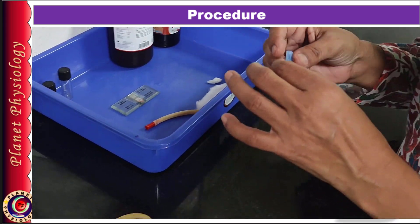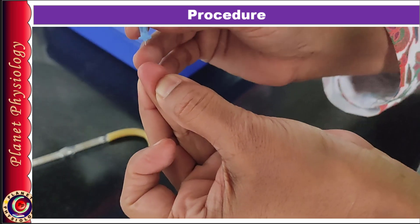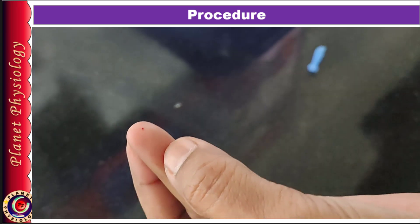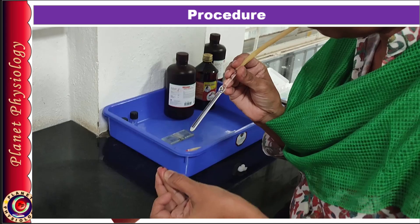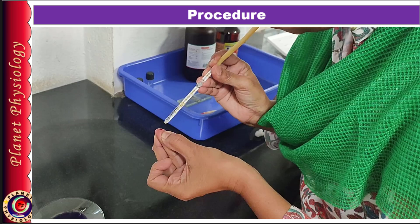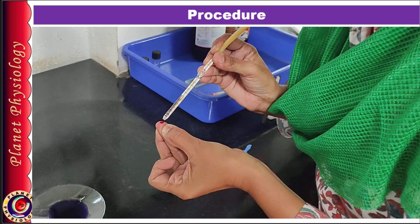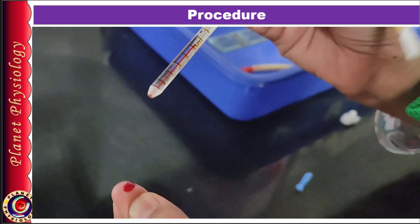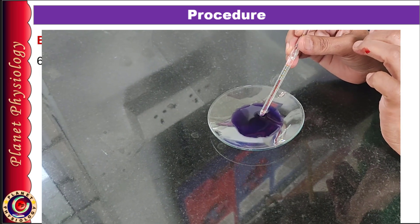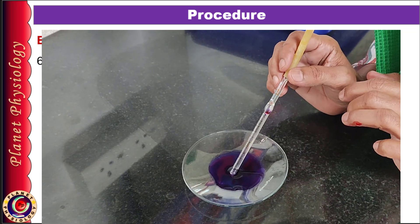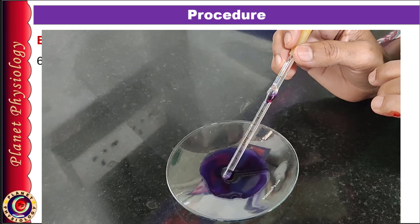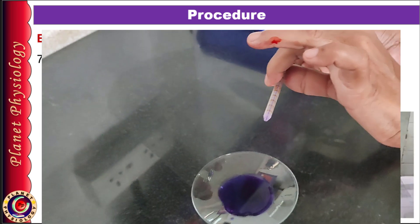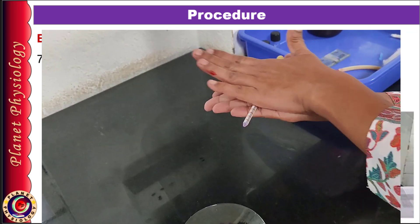Once background preparation is done, you are ready to collect the blood sample. Take a bold finger prick by following all aseptic precautions. Wipe away the first drop with dry cotton and allow an adequate-sized drop to form on the fingertip. Place the tip of the pipette within the drop and gently draw blood exactly up to the 0.5 mark without any air bubbles. Note that the 0.5 mark is the line below the number. Then wipe the tip of the pipette to remove excess blood, immerse it into the diluting fluid, and draw it up to the 11 mark. Mix the contents thoroughly by holding the pipette horizontally between the palms and rotating it. Wait 2 to 3 minutes for completion of hemolysis and staining of the WBC nuclei.